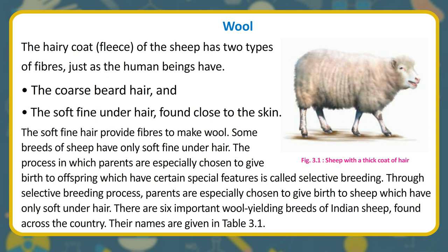Some breeds of sheep have only soft fine under hair. The process in which parents are especially chosen to give birth to offspring which have certain special features is called selective breeding. Through selective breeding, parents are chosen to produce sheep which have only soft under hair.